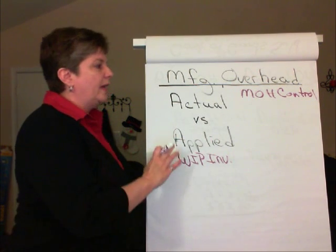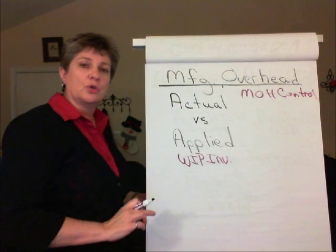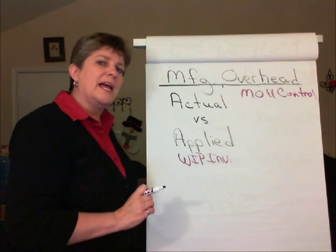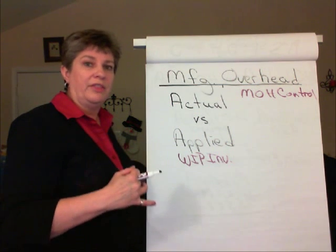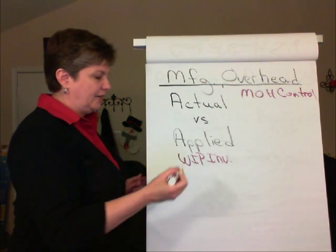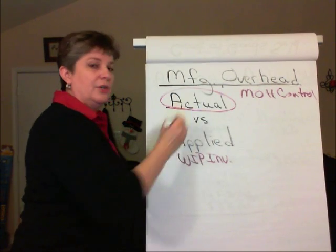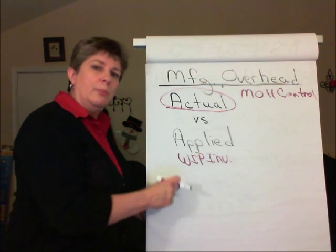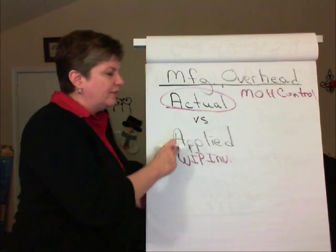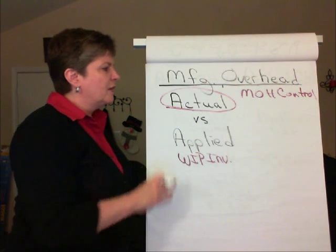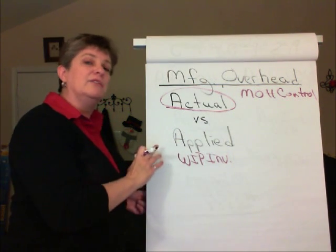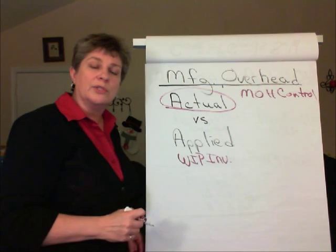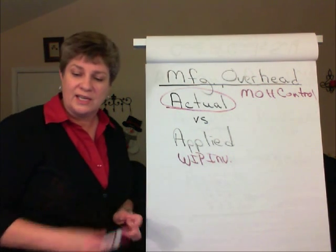What happens when actual overhead costs in manufacturing overhead control differ from the amount of applied overhead, which is based on estimates? We have to do something with that difference, keeping in mind that actual costs are what ultimately need to be reported as part of cost of goods sold and work in process inventory. At the end of the period, we compare actual overhead with applied overhead to find the difference.